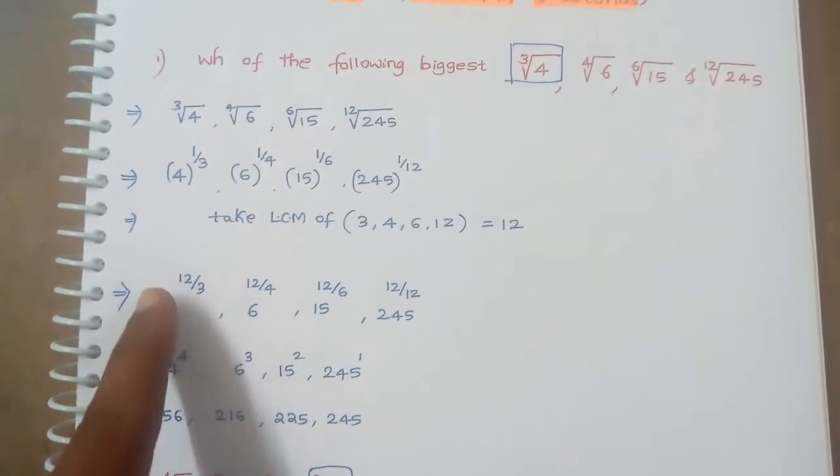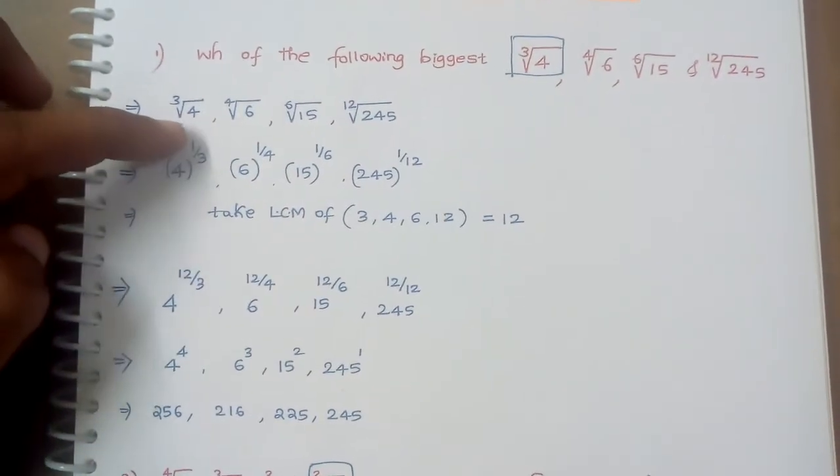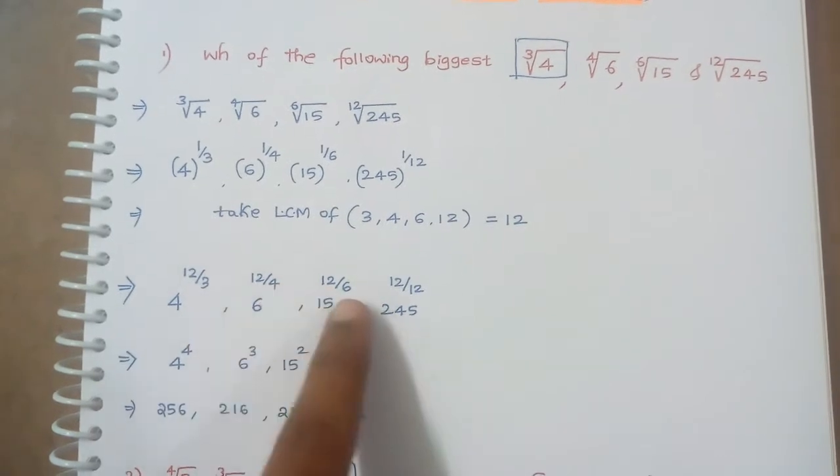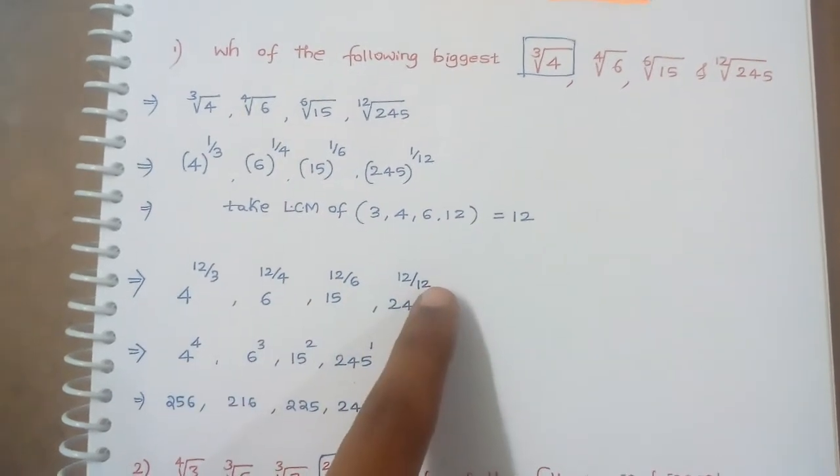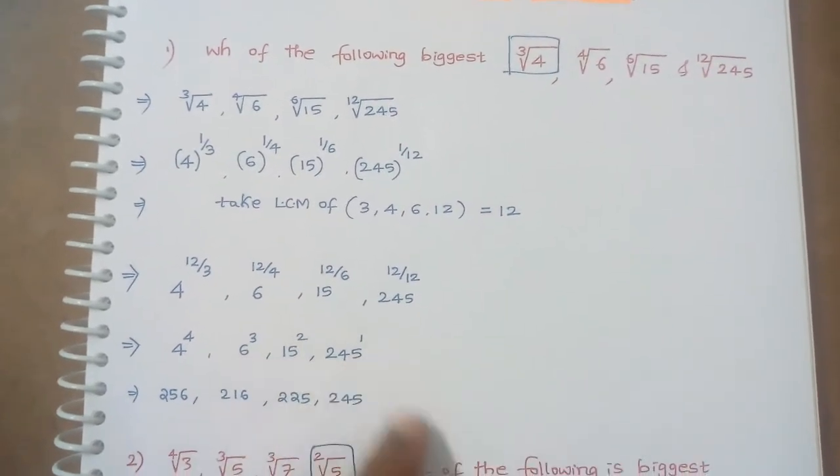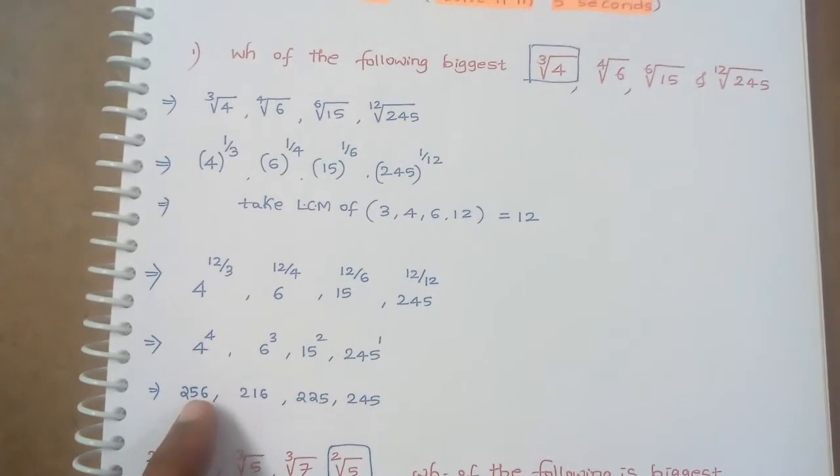So we have to multiply these powers' numerators by 12. So 4 raised to 12 by 3, 12 by 4, 12 by 6, 12 by 12. On solving, we will get 4 raised to 4, 6 raised to cube, 15 raised to 2, 245 raised to 1.